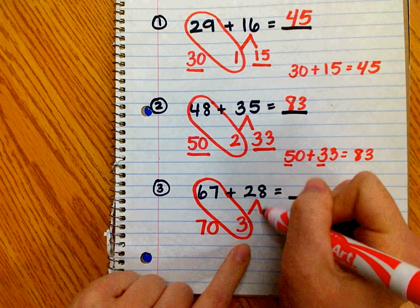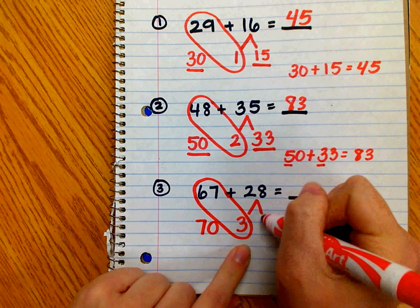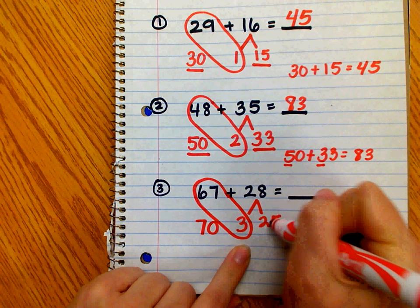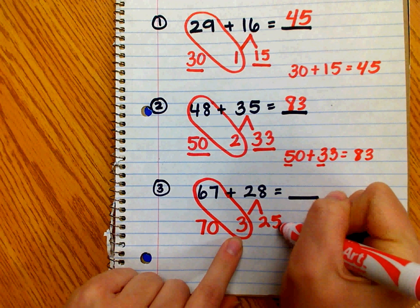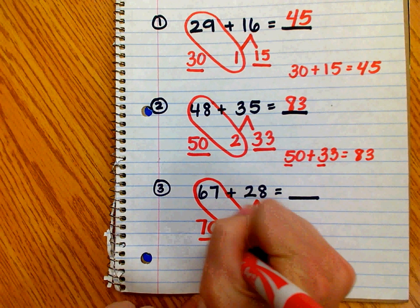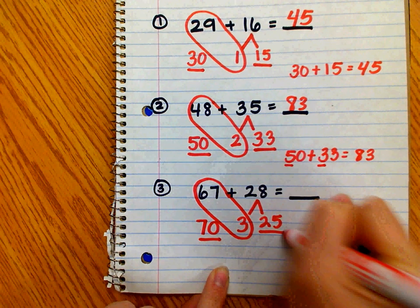If I take 3 from 28, I'm left with 2 tens and 5 ones, because 8 ones minus 3 ones equals 5 ones. So 28 gave 3 to 67 to make 70, and it had 25 left.